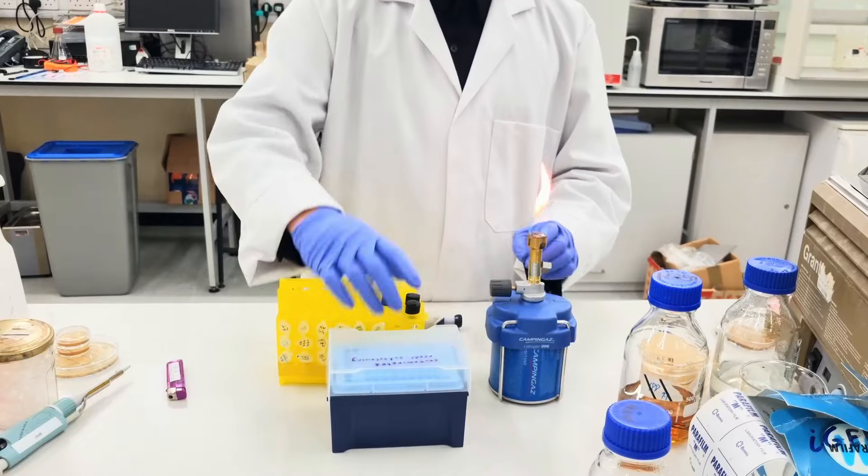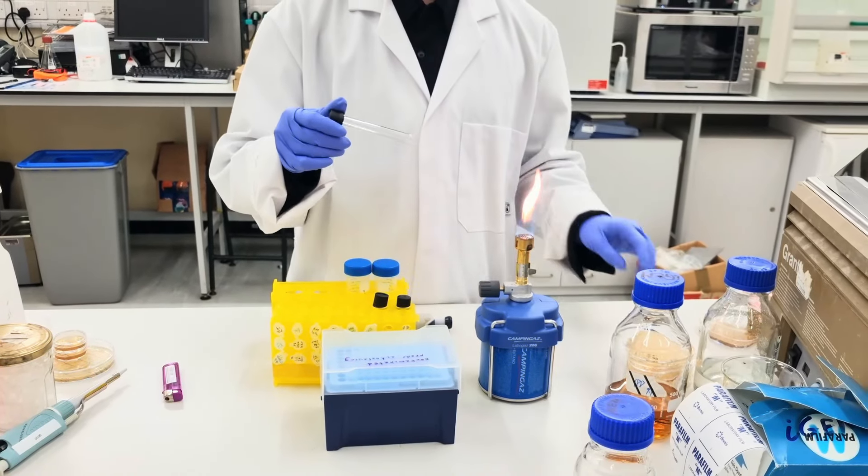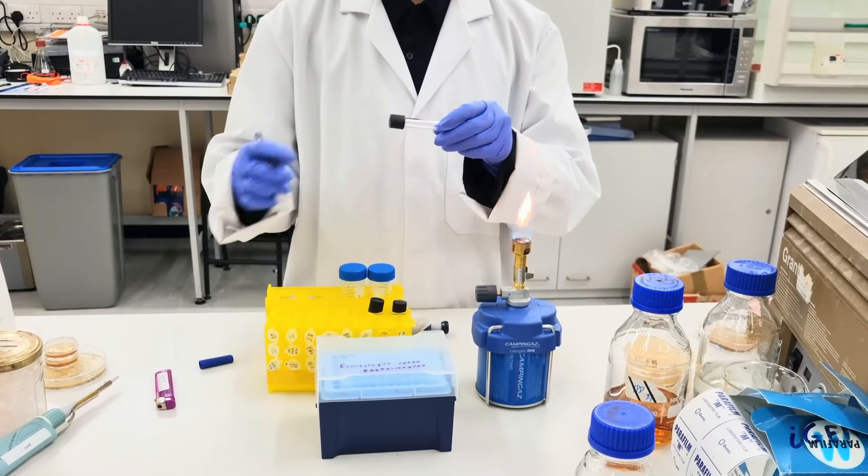And now the next step is to get a fresh culture tube and label them with the names of the strains or dates you want to use.